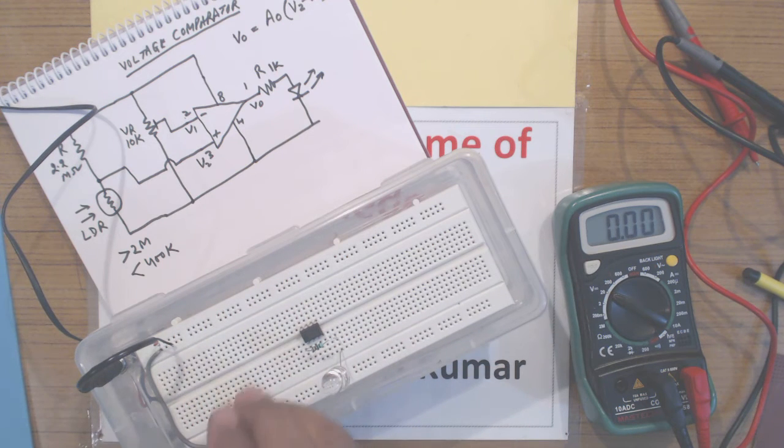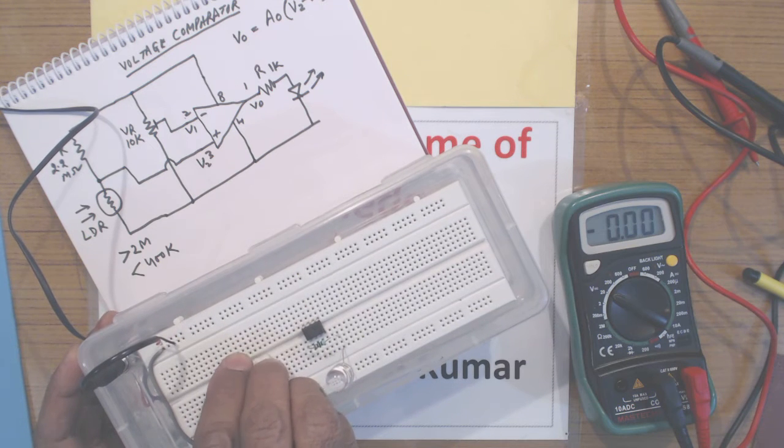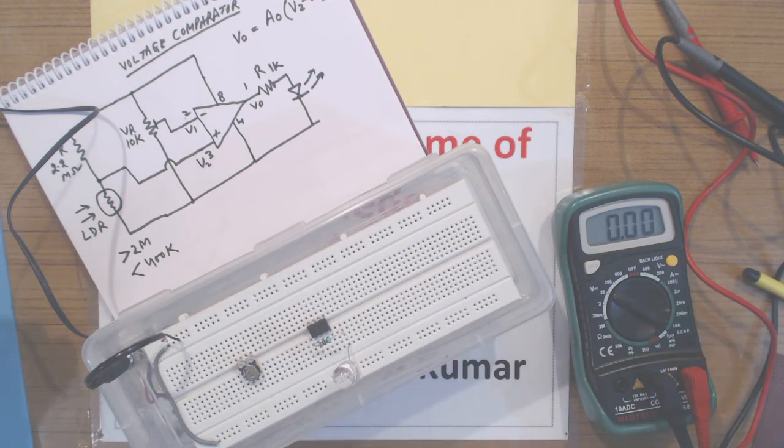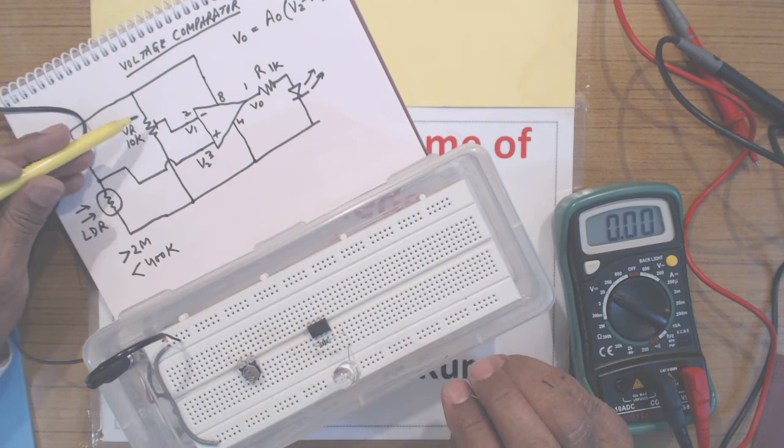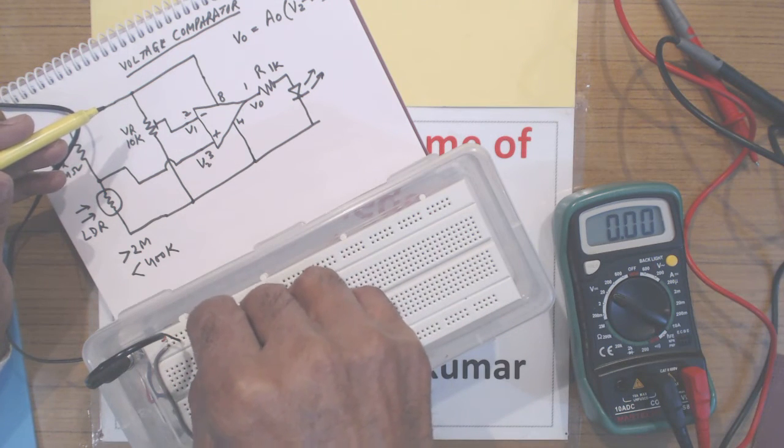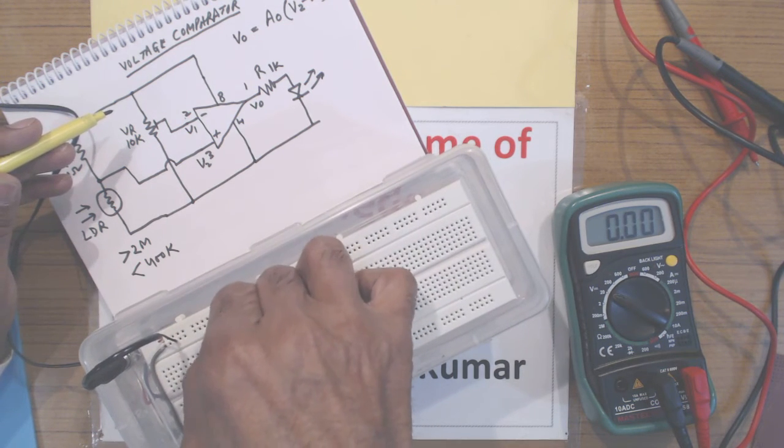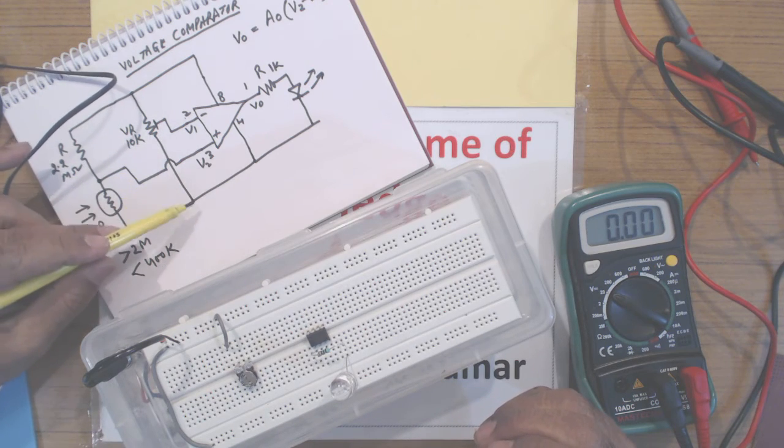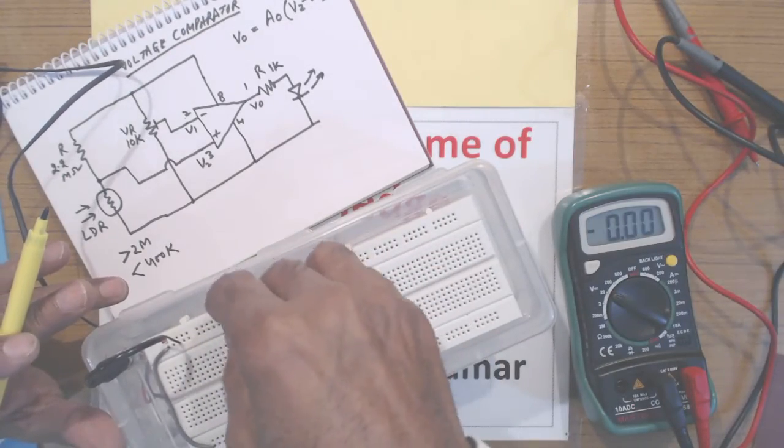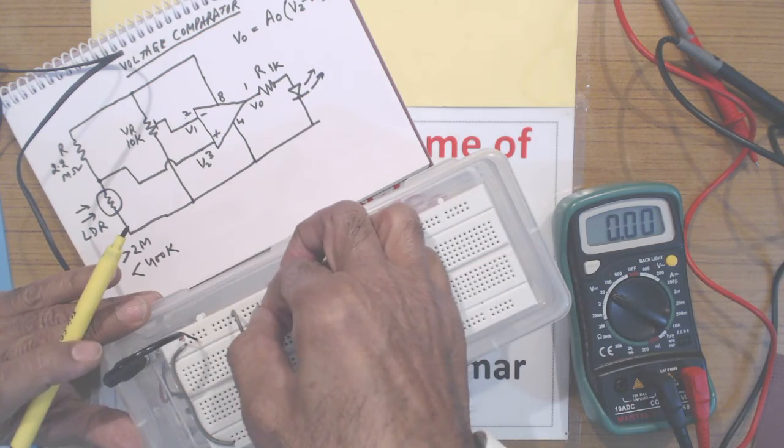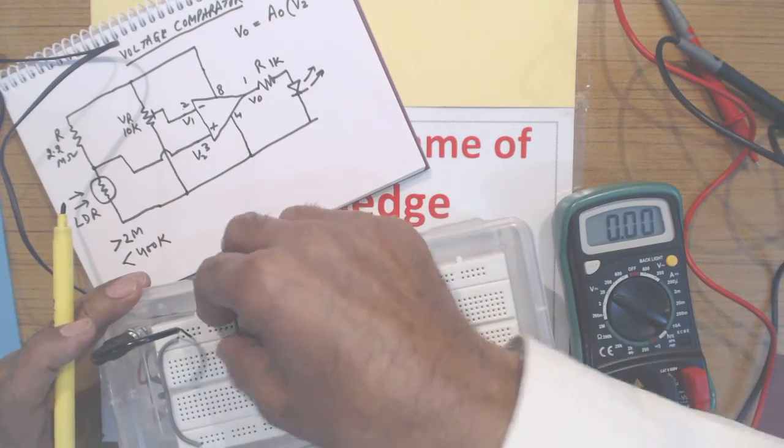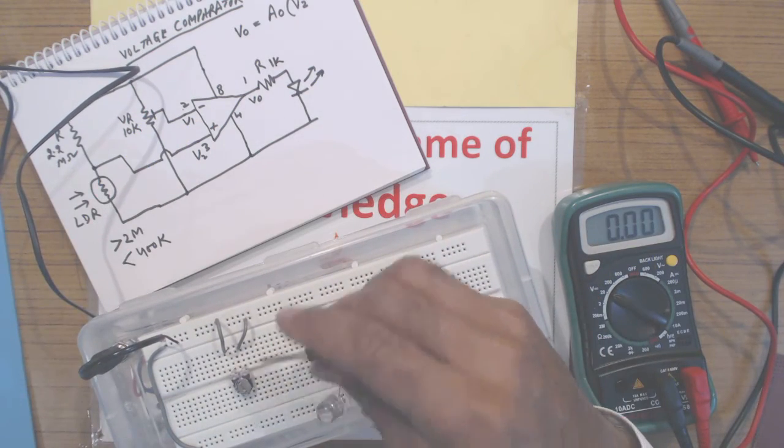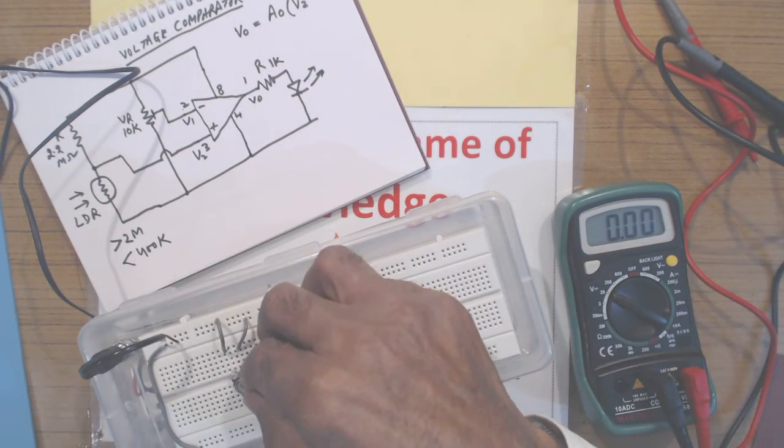Now this potentiometer I am going to place it here somewhere. You can just look at the circuit diagram on the paper - one end of potentiometer will go to positive supply, so I will connect it to the positive supply which is the upper line. The other end here will go to ground which is the lower line supply. The variable point of potentiometer will go to pin number 2.